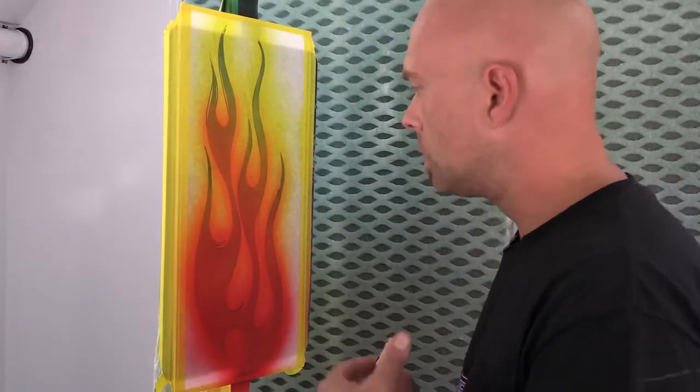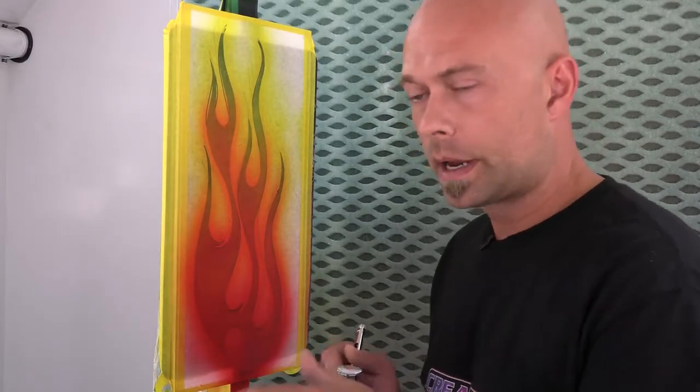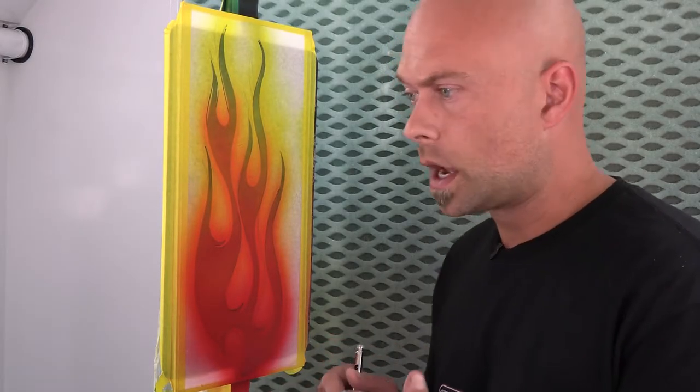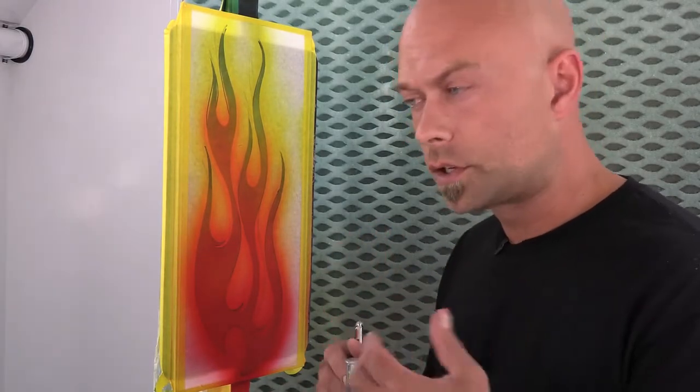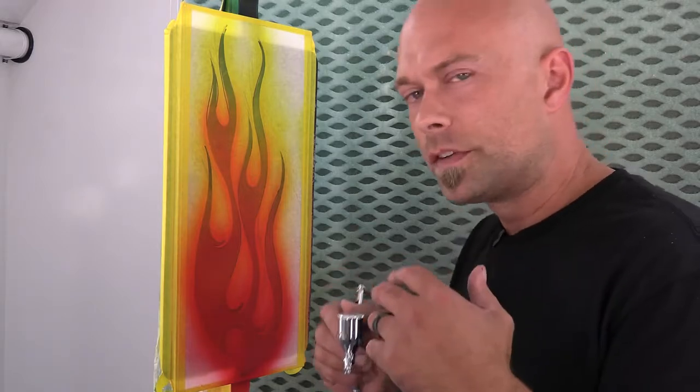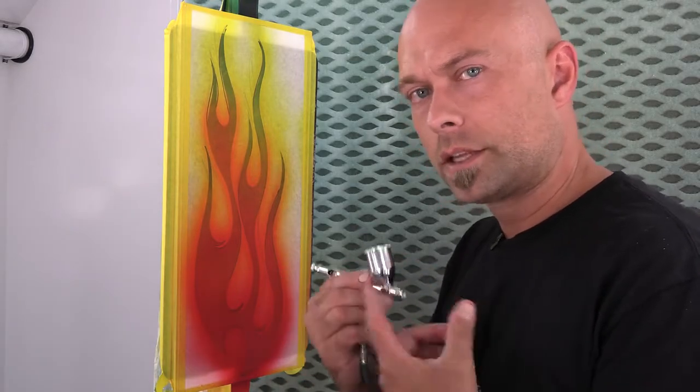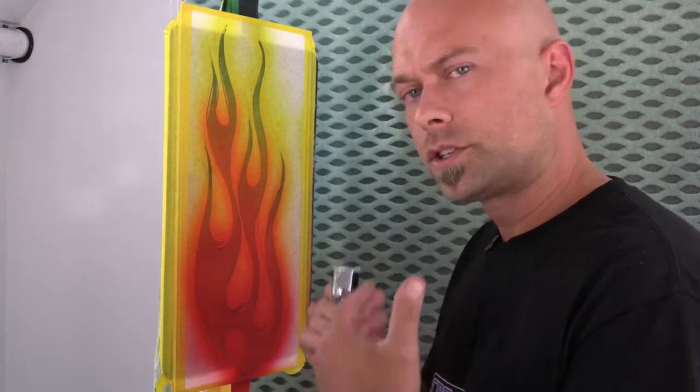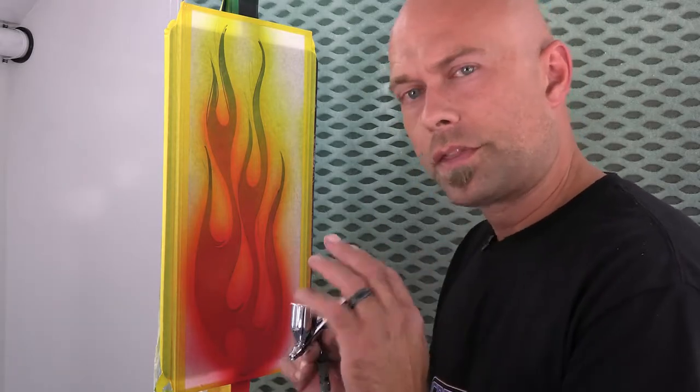Now we are ready to back everything up with our sealer white to make all this pop. Now, the sealer white can be sprayed right out of the bottle with just a little bit of reducer. It's a little bit thicker in viscosity, so you might want to go maybe 15% if you're using a small airbrush. Again, this is a 0.5. So you kind of just reduce to adjust the thickness of the paint.